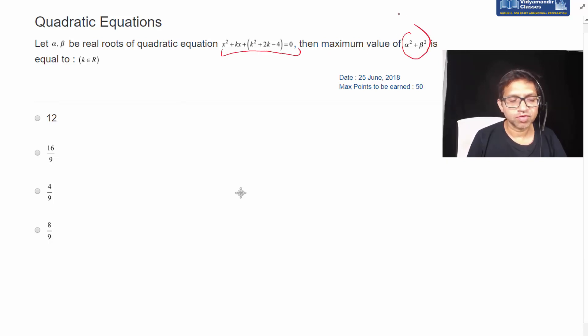of alpha square plus beta square. So let's find alpha square plus beta square first and then we'll see how to maximize it. Alpha square plus beta square can be written as